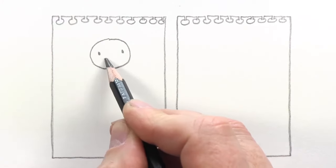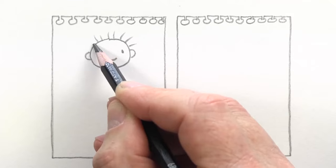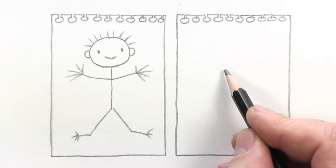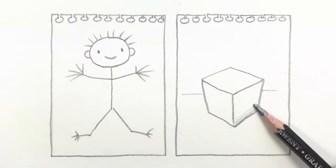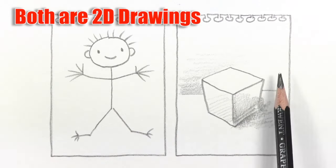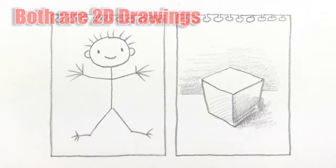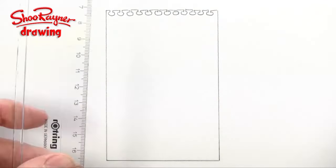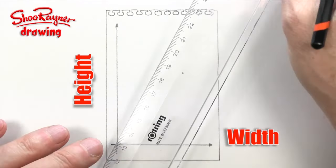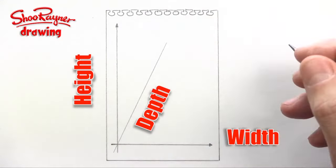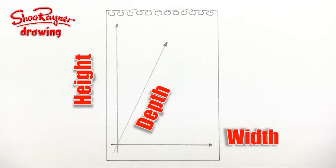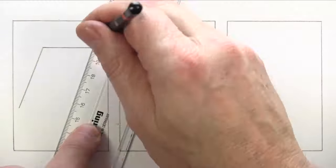We generally think of it as being a two-dimensional surface of just height and width. Anything you draw onto the surface of a piece of paper will be a two-dimensional or 2D drawing. Any drawing that looks 3D is still a two-dimensional drawing. We can create the illusion of 3D by creating the illusion of depth. Height goes from top to bottom, width goes from side to side, and depth seems to go from front to back but really it is going at an angle to the directions of height and width. You can choose any angle you like.